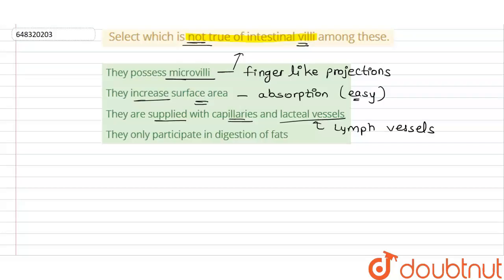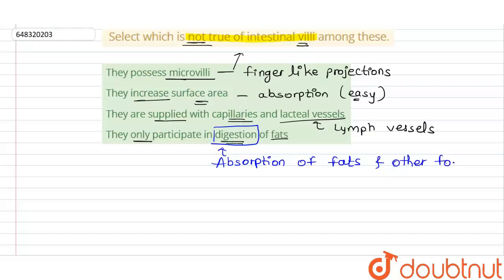The fourth statement says they only participate in the digestion of fats — this is the wrong statement. Intestinal villi do not help in the digestion of fats; rather, they help in the absorption of fats and other food material. Digestion and absorption are two different things, so the correct word here should be absorption, not digestion.